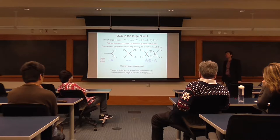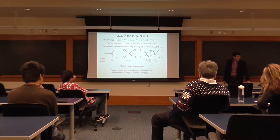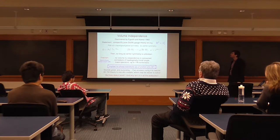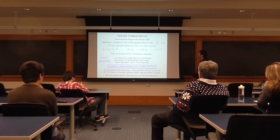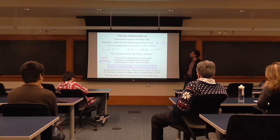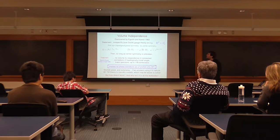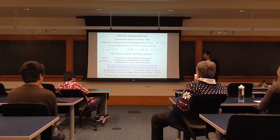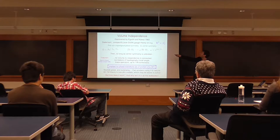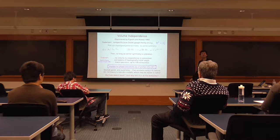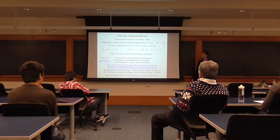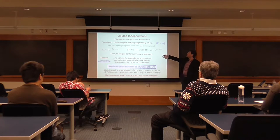Before I tell you about Hagedorn densities of states, let me tell you about volume independence, which I think is less well known. Volume independence was discovered quite a long time ago by some string theorists, actually, in 1982. In the setting in which they were working, they were thinking about just pure SU(N) gauge theory. They take pure SU(N) gauge theory and compactify it — let's say down to R³ times a circle of size L. When you do this in gauge theory, it is known that you pick up a global symmetry which is a topological symmetry, called the Z_N center symmetry.